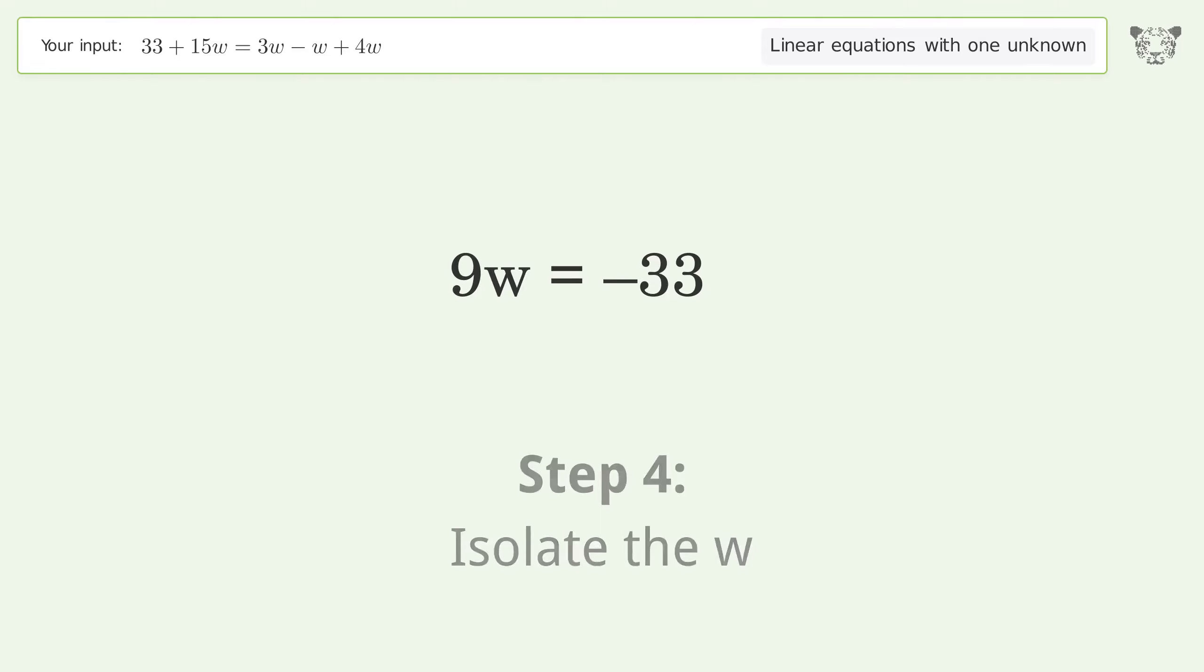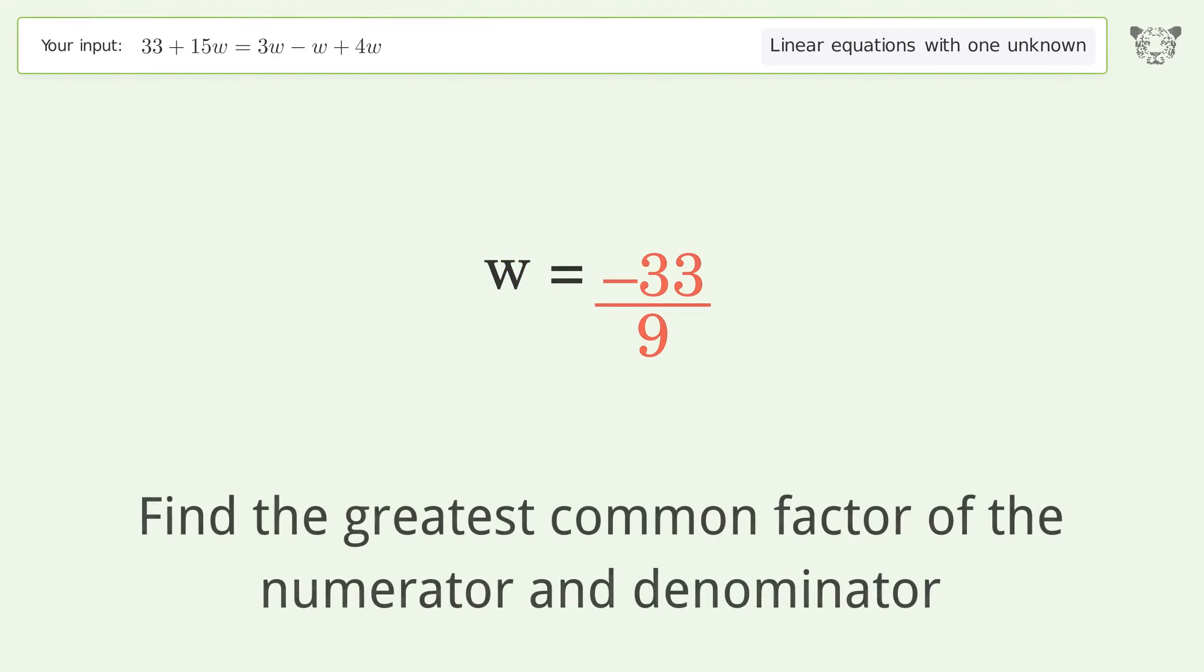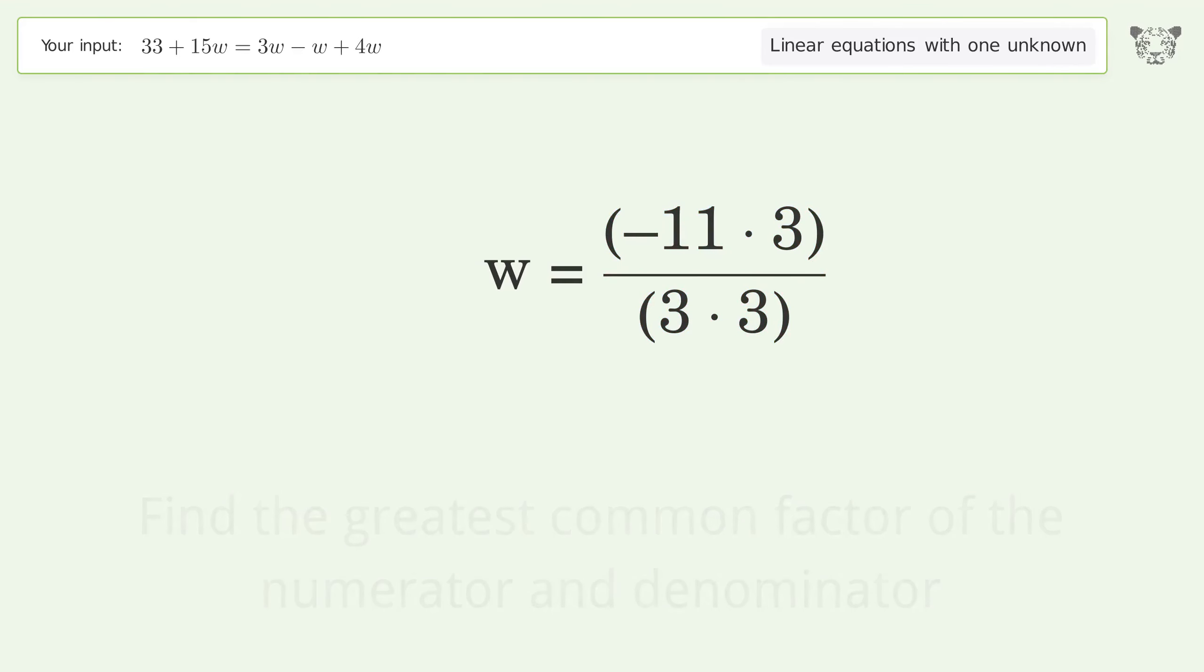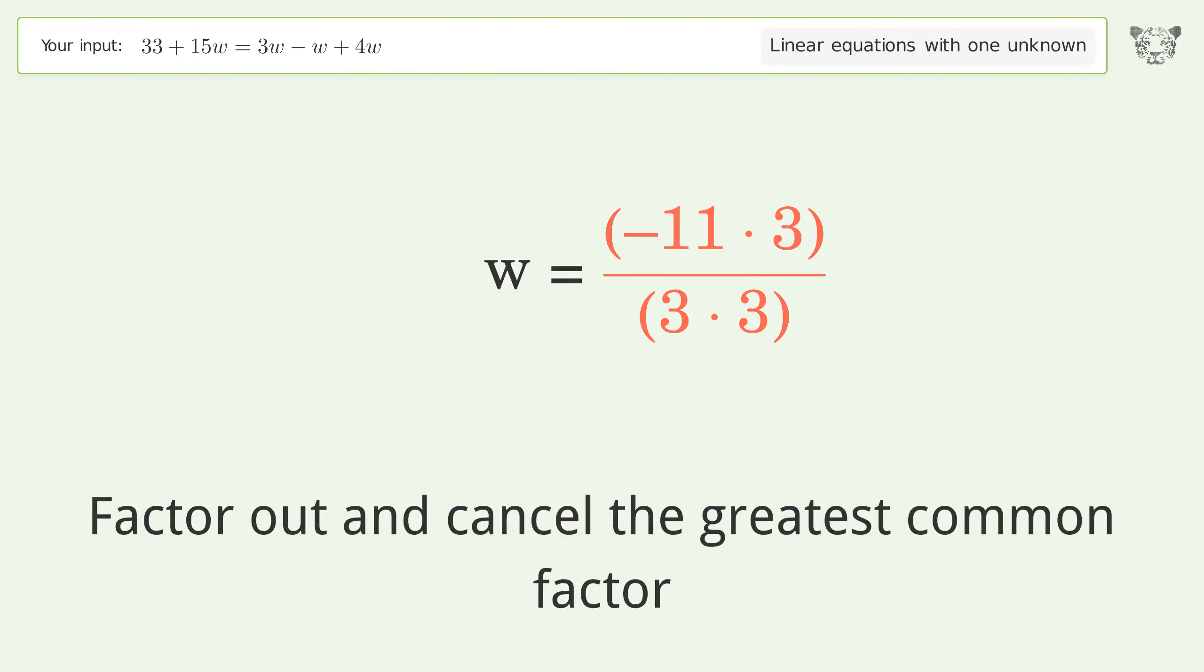Isolate the w by dividing both sides by 9. Simplify the fraction. Find the greatest common factor of the numerator and denominator. Factor out and cancel the greatest common factor.